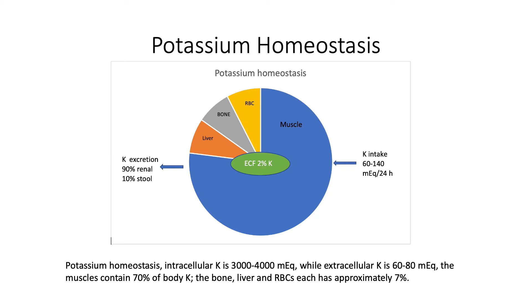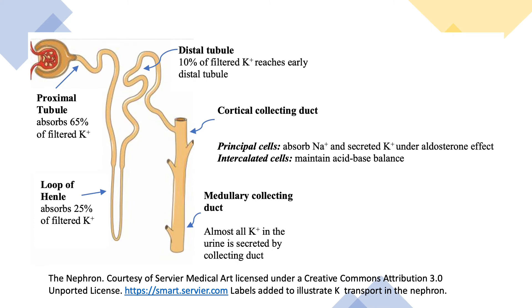Potassium excretion is 90% renal and 10% in the stool. We also discussed the anatomy of the nephron. As far as potassium, 65% of filtered potassium is reabsorbed in the proximal tubule, 25% in the loop of Henle, and 10% in the distal tubule. If you add that up, you reach the conclusion that potassium is filtered and then almost completely reabsorbed.